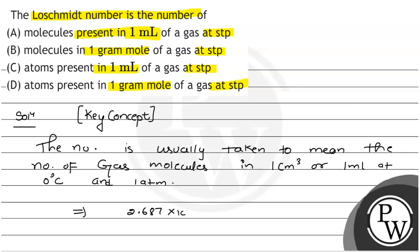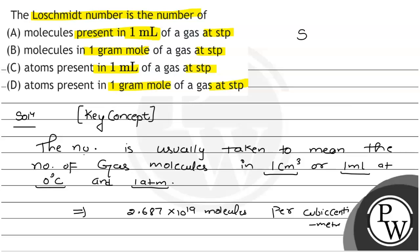So this implies that 2.687 into 10 to the power 19 molecules per cubic centimeter. The key concept of the question is that you need to find out what the Lohschmidt number is — it is the mean number of gas molecules under specific conditions: volume of 1 centimeter cube (1 milliliter), temperature 0 degree Celsius, and pressure 1 atmosphere. At that particular condition, that's called the Lohschmidt number: 2.687 into 10 to the power 19 molecules per cubic centimeter.